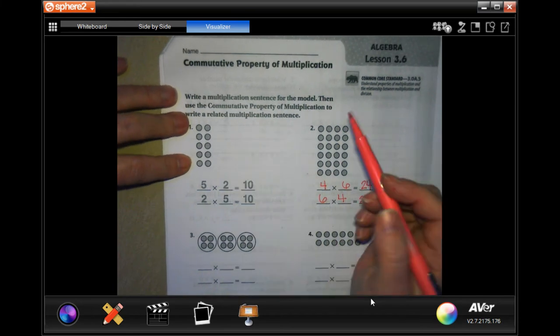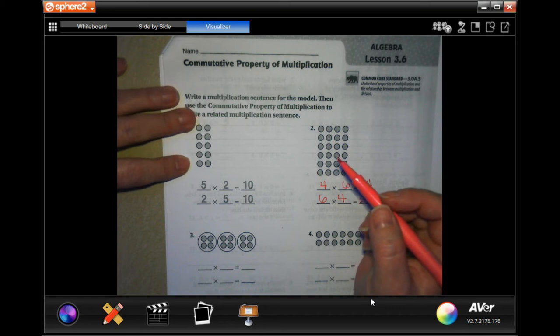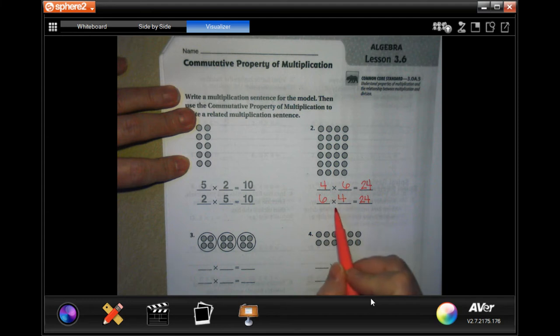When you are doing, I'm going to give you a hint to try to remember your properties. The commutative property, when you commute somewhere, it means that you go there. So you're moving there. So we have the same exact numbers, just in a different order, which means that the numbers moved. The commutative property means you have the same three numbers, but they move.